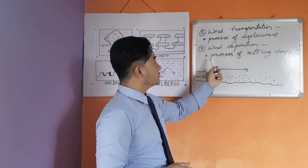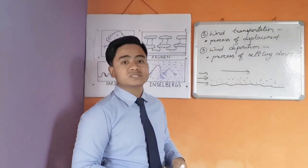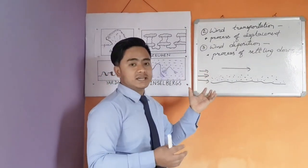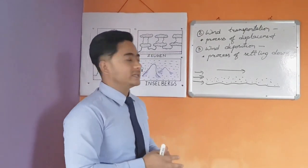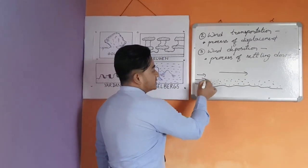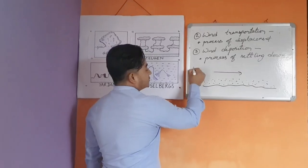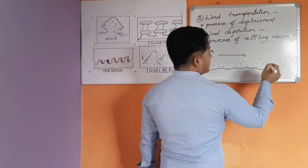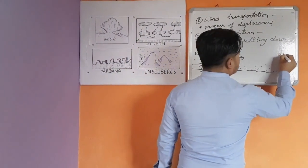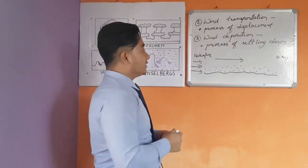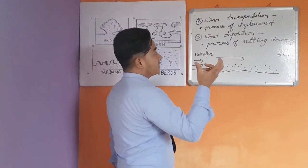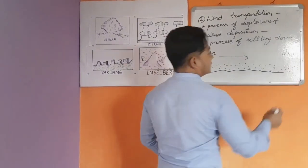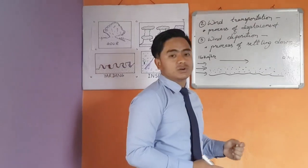The third work of wind is wind deposition. Wind deposition is the process of settling down. When the wind blows from one direction to another, it carries sand, sediments, and dust particles from one place to another. However, the velocity of the wind does not remain the same everywhere — if the velocity is 16 kilometers per hour at one point, it may decrease and fall to near zero at another end of the desert. At that point, all the displaced and transported sand and sediments start settling down and depositing. This process is called wind deposition.